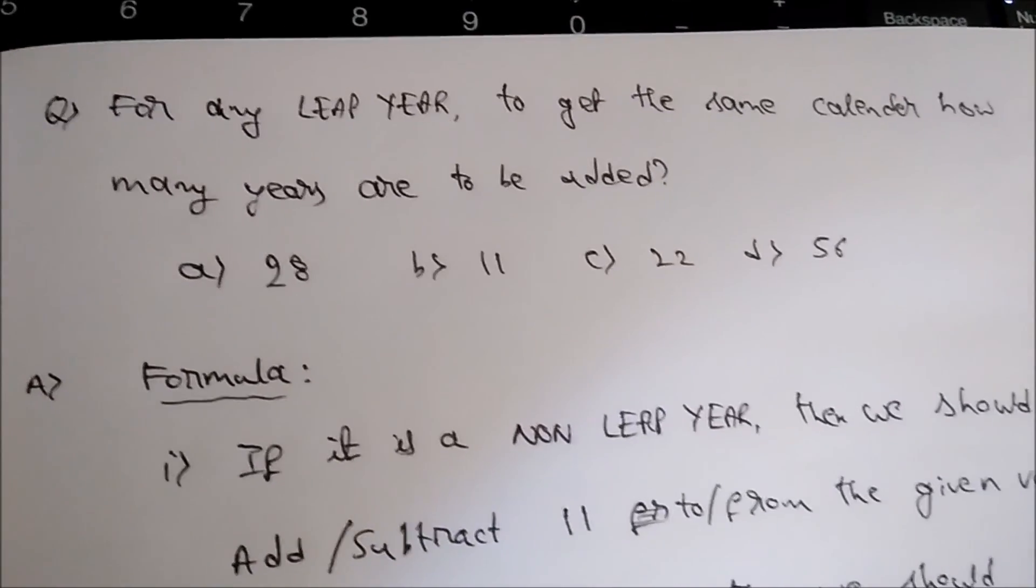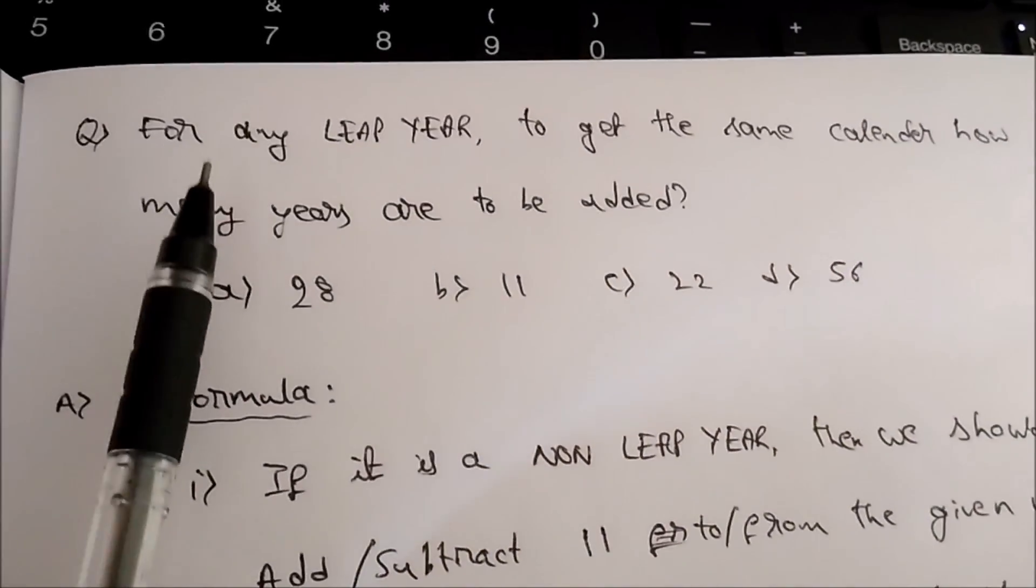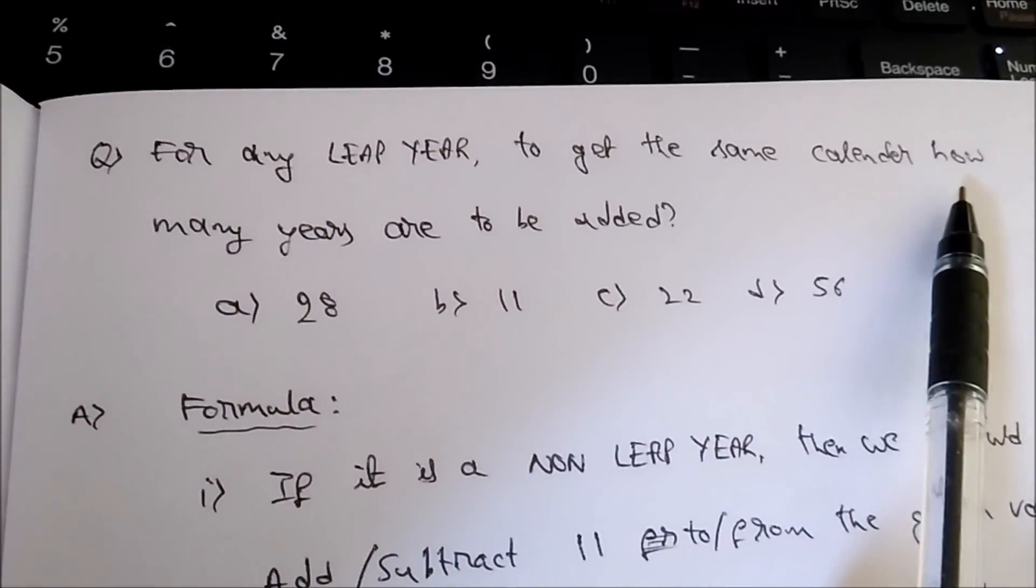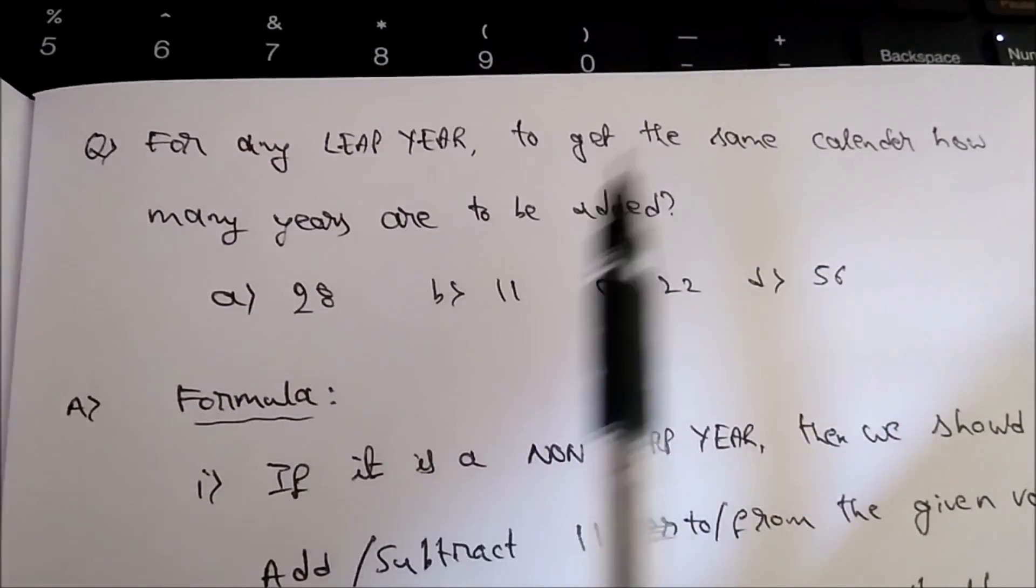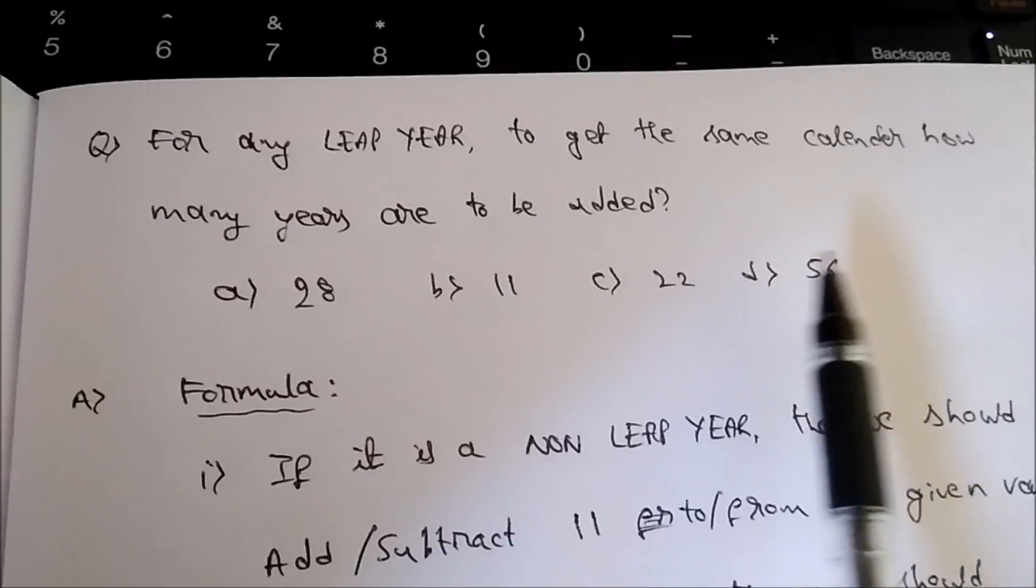Hi friends, today I have taken a problem from the topic calendars and the question goes like this: for any leap year to get the same calendar, how many years are to be added? Options are 28, 11, 22, 56.